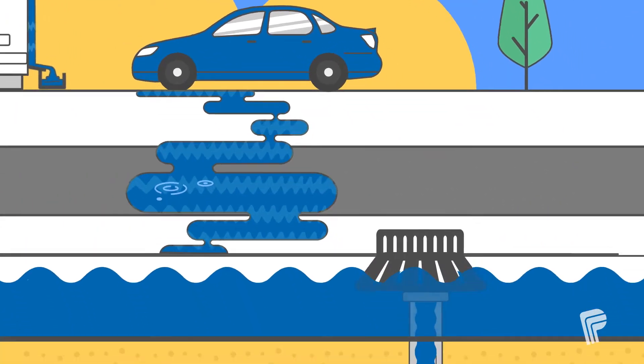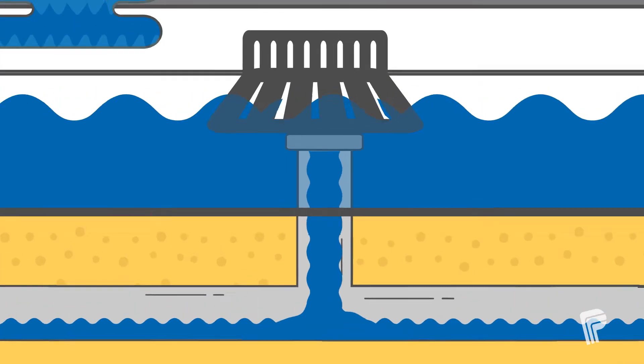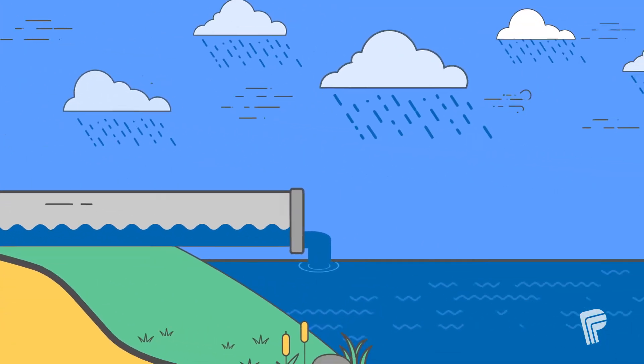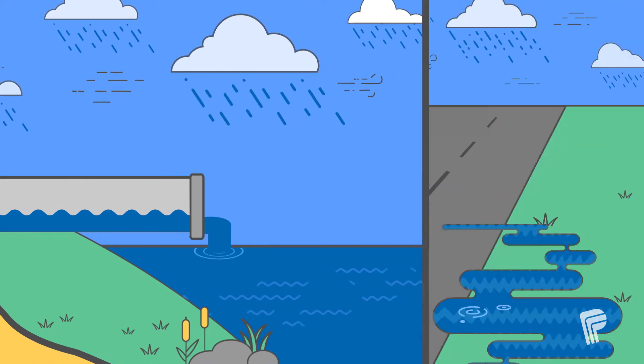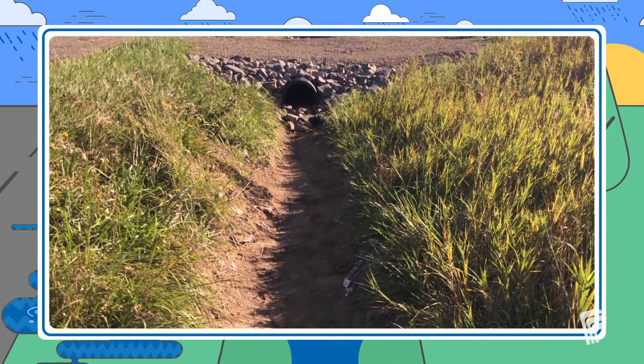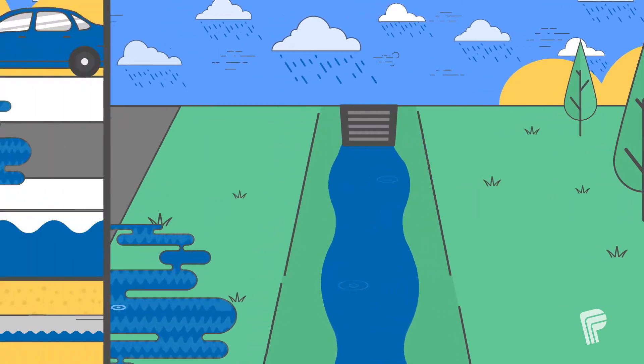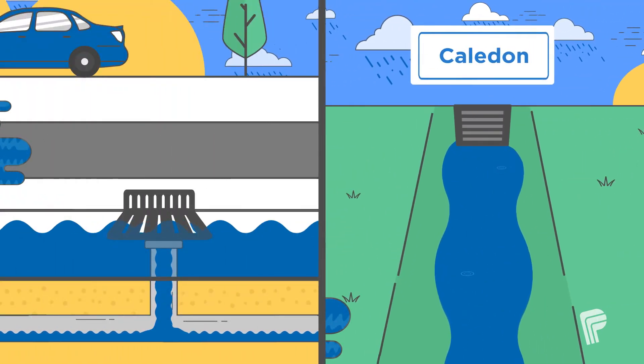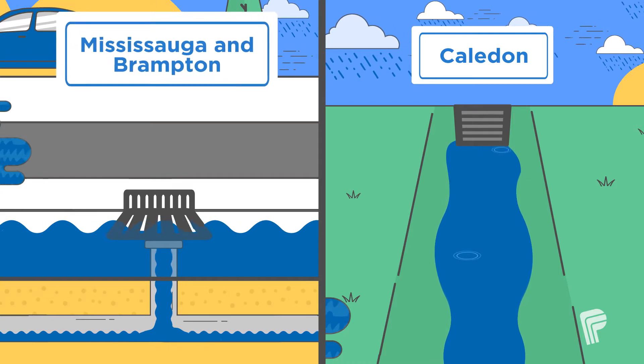Your neighborhood may have pipes and ditches in place so stormwater can flow into your local creek or river. Ditches are more common in rural communities like Caledon, while sewers and catch basins are more common in urban communities such as Mississauga and Brampton.